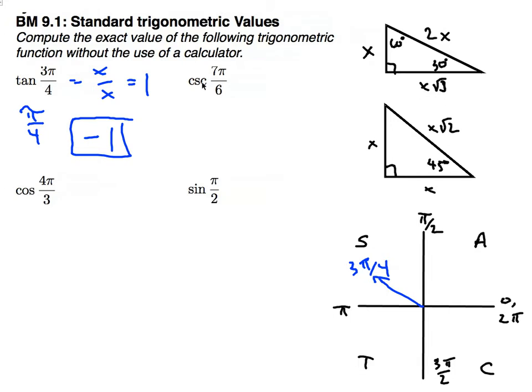Next problem, cosecant 7π over 6. Cosecant is 1 over sine of 7π over 6. So again, find that reference angle, which is π over 6. And that is a 30 degree angle in degrees. So I'm going to go to my 30, 60, 90, and sine is opposite over hypotenuse. So that's going to be x over 2x, which simplifies to 1 half.